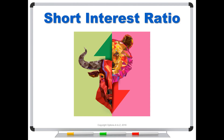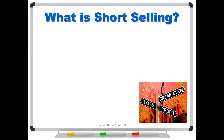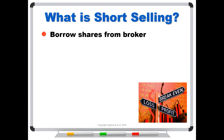To understand the short interest ratio, you have to understand short selling. Short selling is a type of trading where you borrow shares from the broker. Think of it like a credit card — if you swipe the card, you're borrowing money, and it's instantaneous. If you have a margin account with your broker, it's just that quick to short sell shares. If you have a cash account, you would not be able to sell short. But if you have an options account, you must have a margin agreement, which means you would have the ability to short shares.